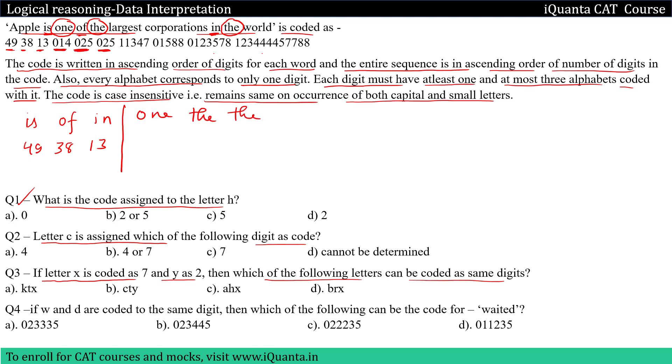We can see that 025 appears two times, so 'the' will definitely be coded as 025. And for 'one', there is only one possibility — it will be 014.